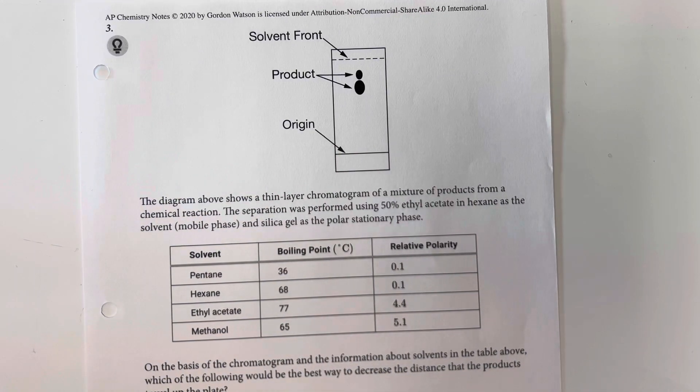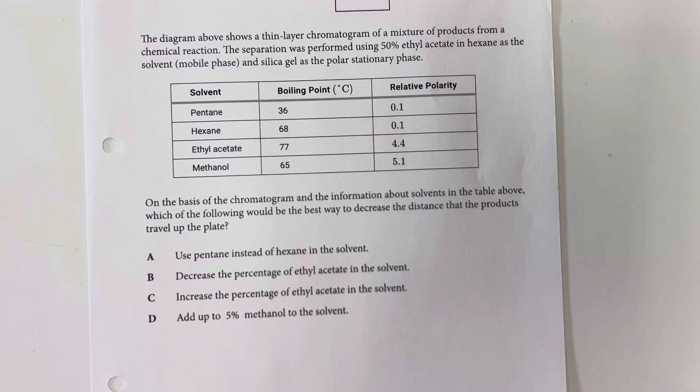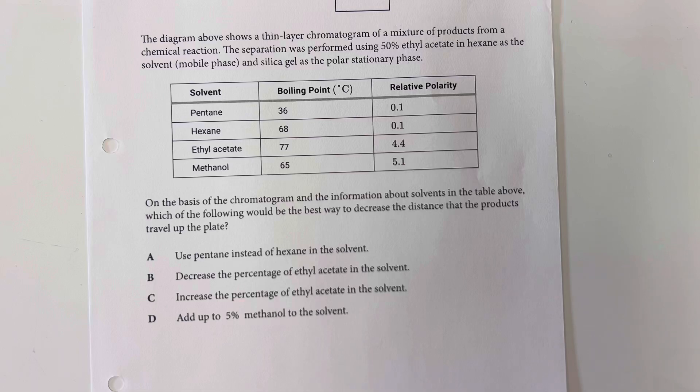The diagram above shows a thin layer chromatogram of a mixture of products from a chemical reaction. The separation was performed using 50% ethyl acetate and hexane as the solvent, the mobile phase, and silica gel as the polar stationary phase. On the basis of the chromatogram and the information about solvents in the table above, which of the following would be the best way to decrease the distance that the products travel up the space.